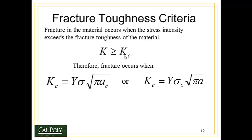So just like with the static toughness, fracture toughness can tell us when a material will break if the stress intensity is greater than or equal to K sub C. Therefore, fracture occurs under two conditions. If I replace K in the previous equation with K sub C, fracture occurs when K sub C equals Y times the stress times the square root of pi times the critical crack, A sub C. Or, K sub C equals Y times the critical stress times the square root of pi A.